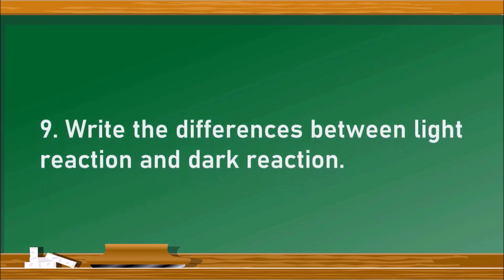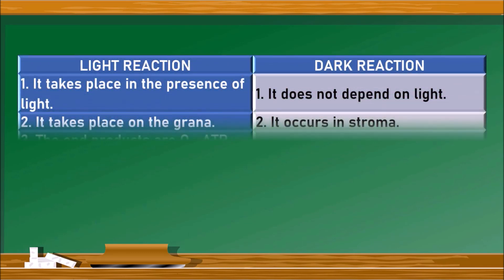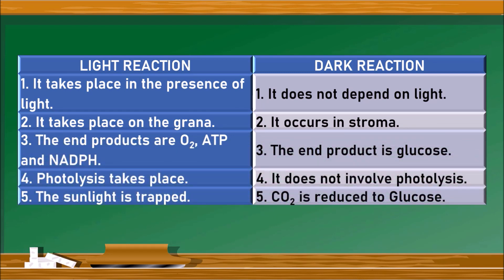The next question: write the differences between light reaction and dark reaction. Light reaction takes place in the presence of light, whereas dark reaction does not depend on light. Note: we should not write that dark reaction takes place in darkness — dark reaction does not require light but can occur both in light and darkness. Light reaction takes place on the grana (thylakoid membranes), whereas dark reaction occurs in the stroma. The end products of light reaction are oxygen, ATP, and NADPH.